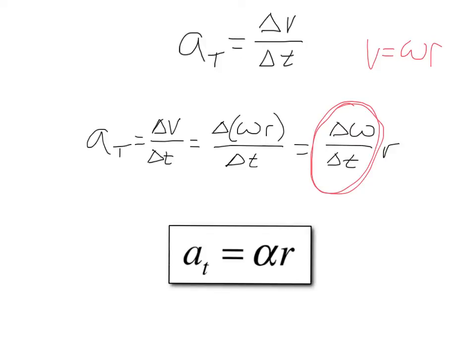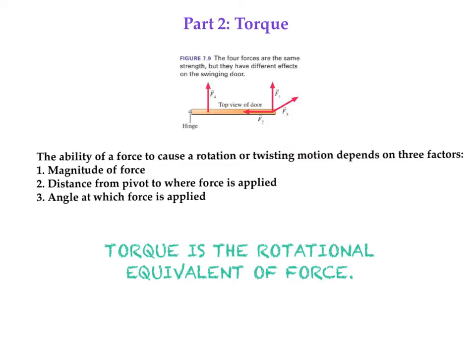From here we can clearly see the connection between uniform circular motion and rotational motion. What we've covered so far is really the kinematics of rotational motion. Now we need to move into talking about torque — the dynamics of rotational motion. Here we have a top-down view of a door, with the hinge on one side and the handle on the other.